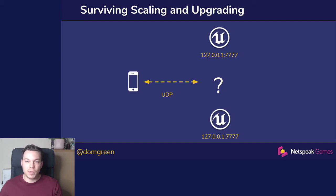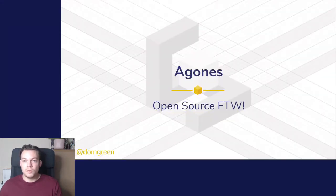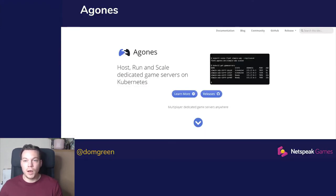This is definitely one of the bigger issues. It's also a problem if we want to upgrade our game server — deploying a new image version would result in all containers being restarted into that new version. Thankfully, open source came to our rescue. There's a project called Agones. You can go to agones.dev to find out more about it — it allows us to host, run, and scale dedicated servers on top of Kubernetes. This project was actually built by Ubisoft and Google to help Ubisoft scale their own game servers on top of Kubernetes.